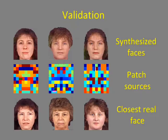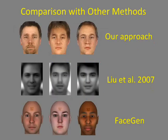We can check this by looking at the source of the original patches. Different colors represent different original images. Moreover, the closest matching face in the database looks quite different. Here we compare our results to a recent paper that synthesized random face images and a commercial product that generates 3D textured head models.